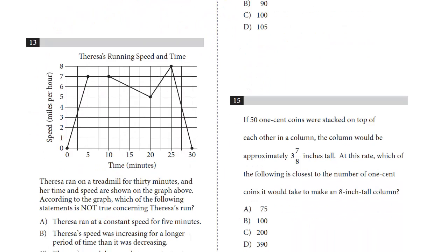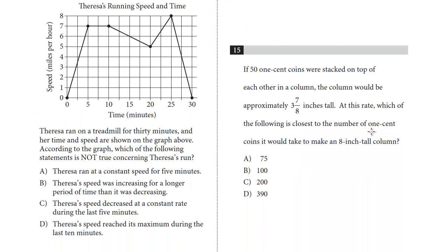Let's take a look at 13, it's a graph question. We've got Theresa's speed and time on the y-axis for speed and time in minutes. So it's sort of a random slope. It goes up, it's static, gradually down, sharply up, sharply down. She ran on the treadmill for 30 minutes. And her time and speed are shown above. According to the graph, which of the following statements is not true?